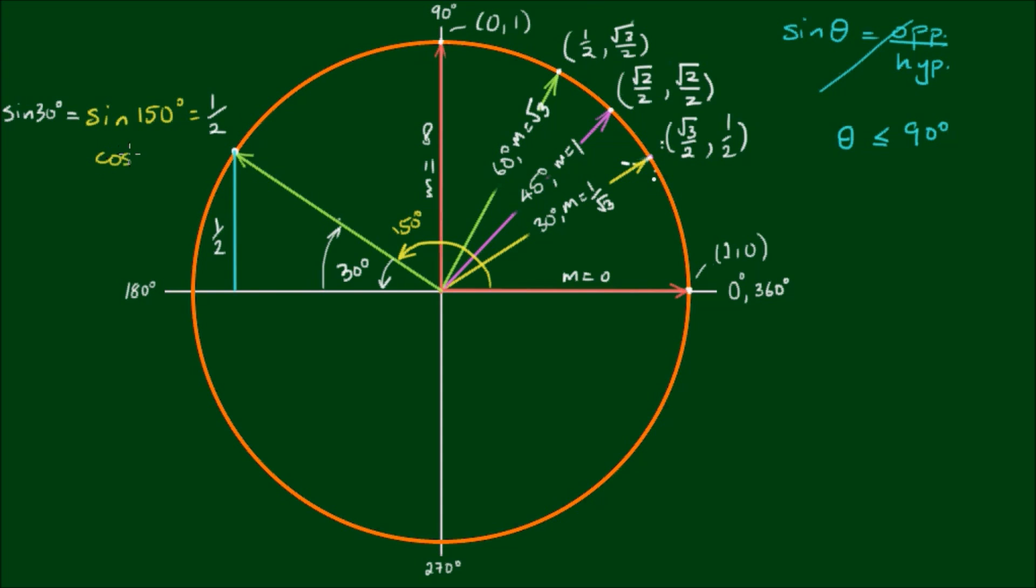But what about the cos of 150 degrees? Here we're operating in quadrant 2. On the top right we have quadrant 1, on the bottom left we have quadrant 3, and on the bottom right we have quadrant 4.